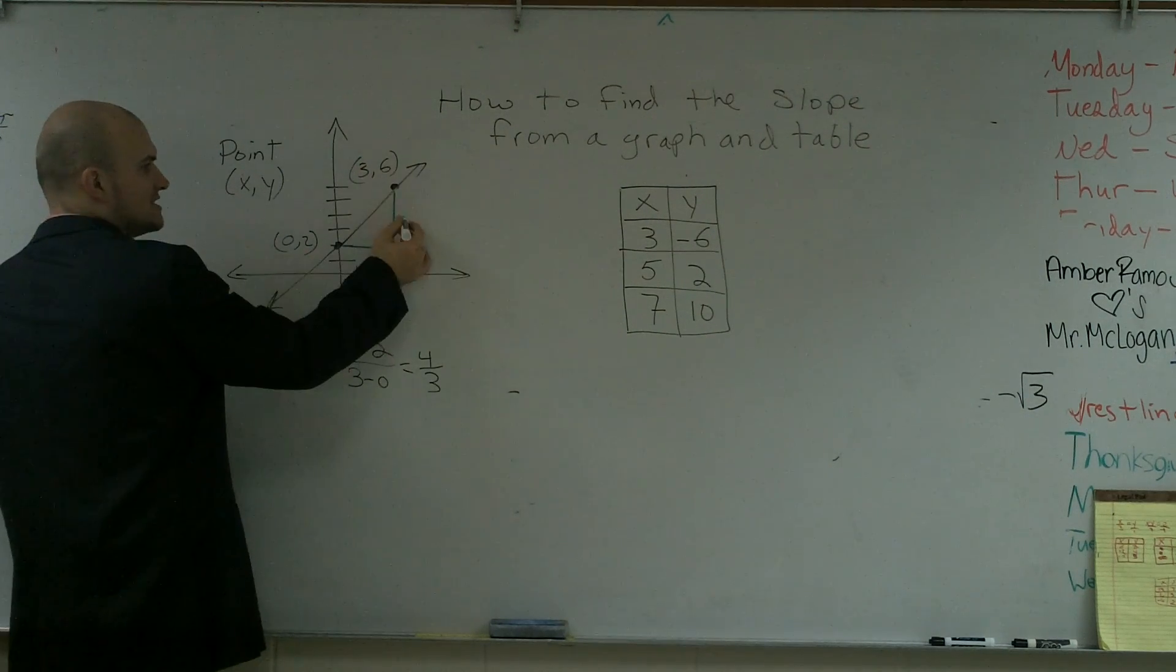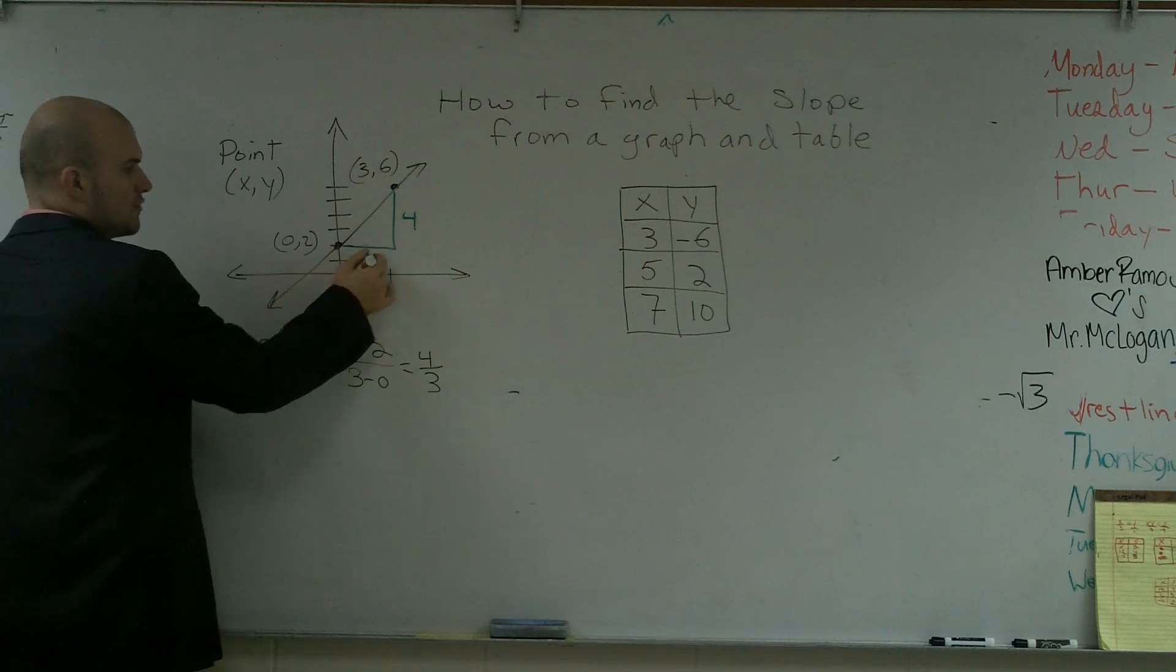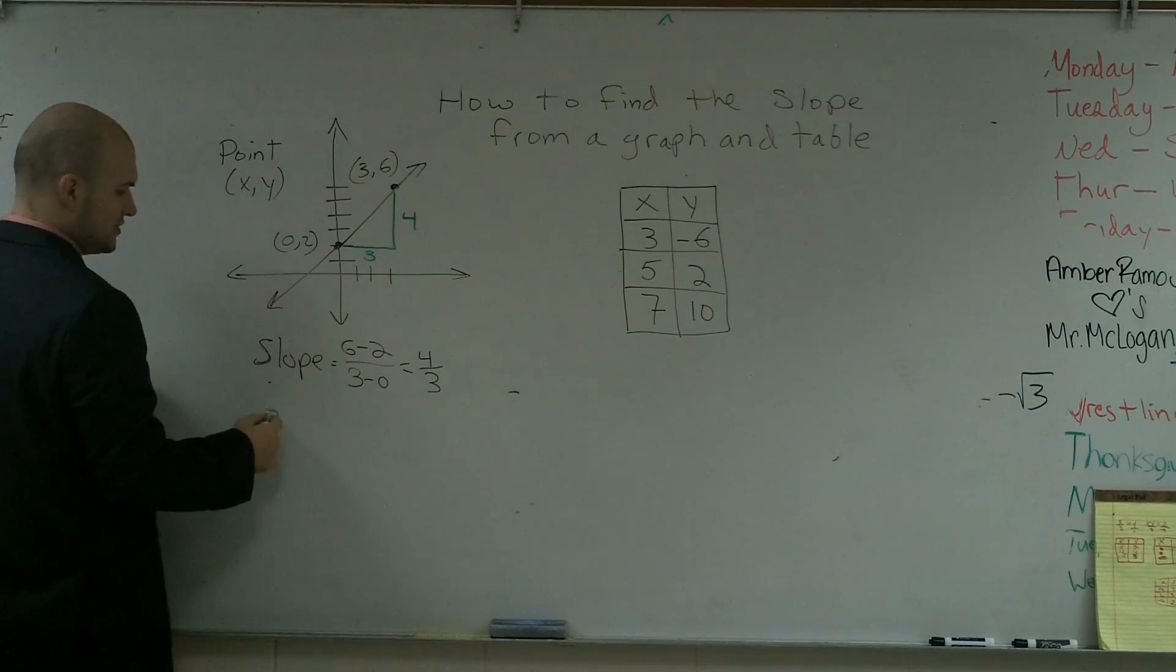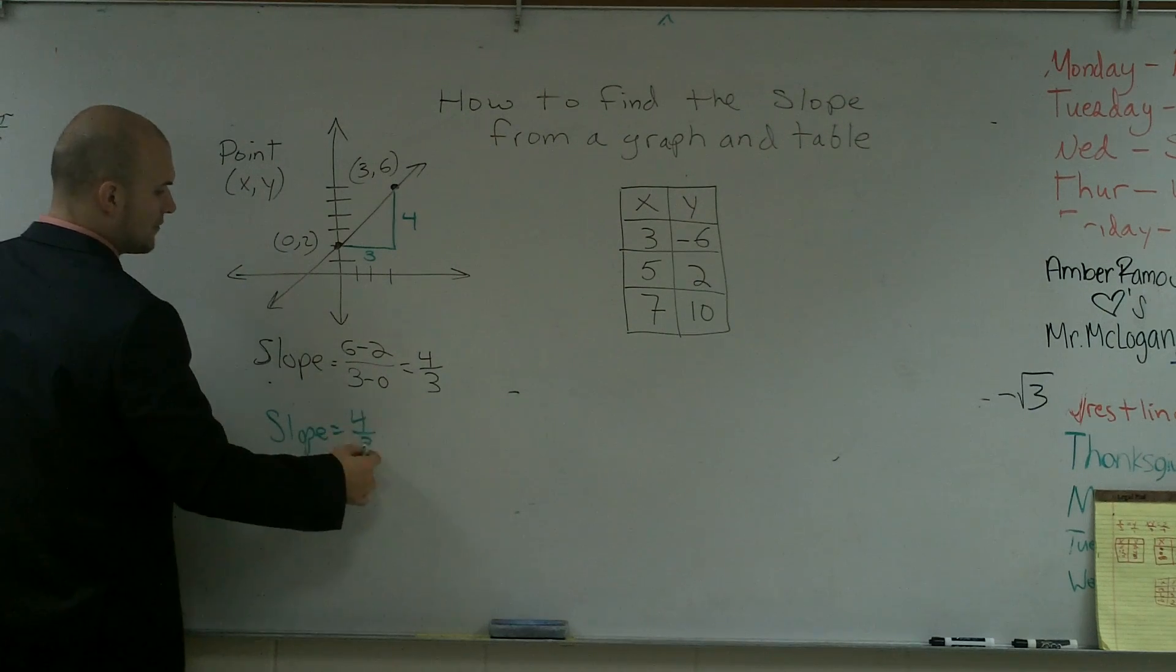We can say if I went to 2 and I go to 6, I went 4 units this way. And from here to here, I go over 3 units. So again, you could do slope equals 4 over 3.